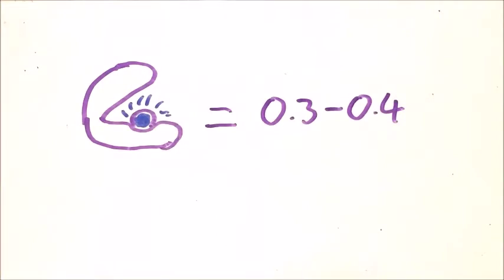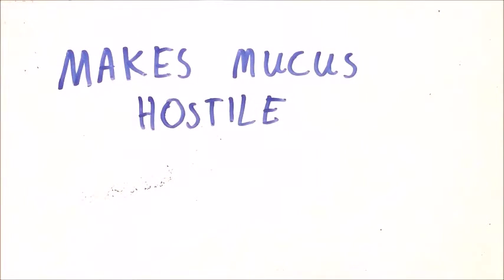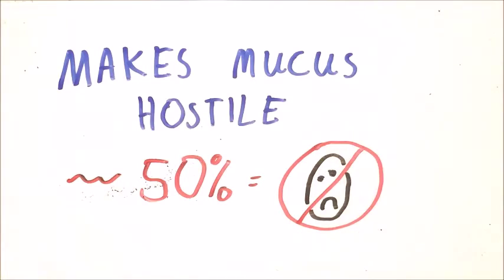They are slightly less effective than combined contraceptives, with a Pearl index of about 0.3 to 0.4. They work by making the mucus thick and hostile to prevent sperm getting into the womb, and in about 50% of cycles they also prevent ovulation.